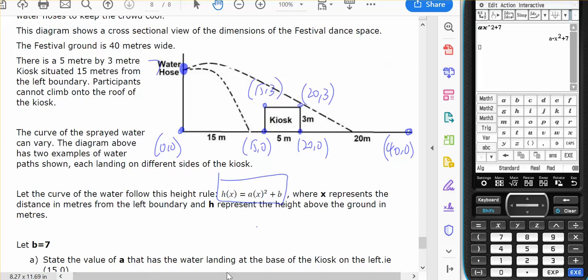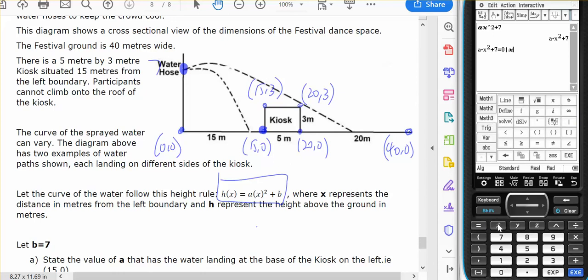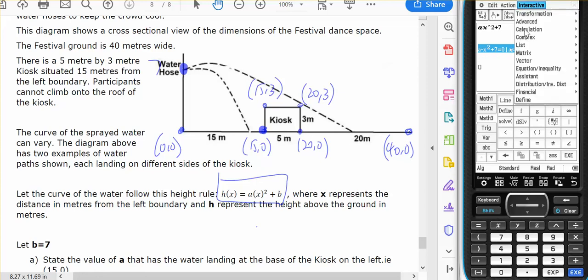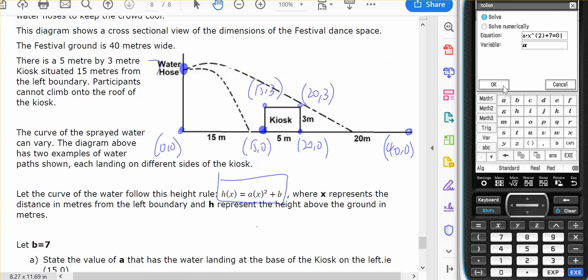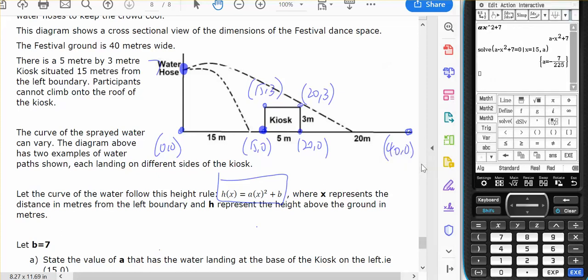The state of value is the value of the water landing at the base of the kiosk to the left, i.e. fifteen zero. So for water to land here then I have to have this equal zero given x equals fifteen and solve for a and a equals minus seven on 225. So this point here a equals minus seven on 225.